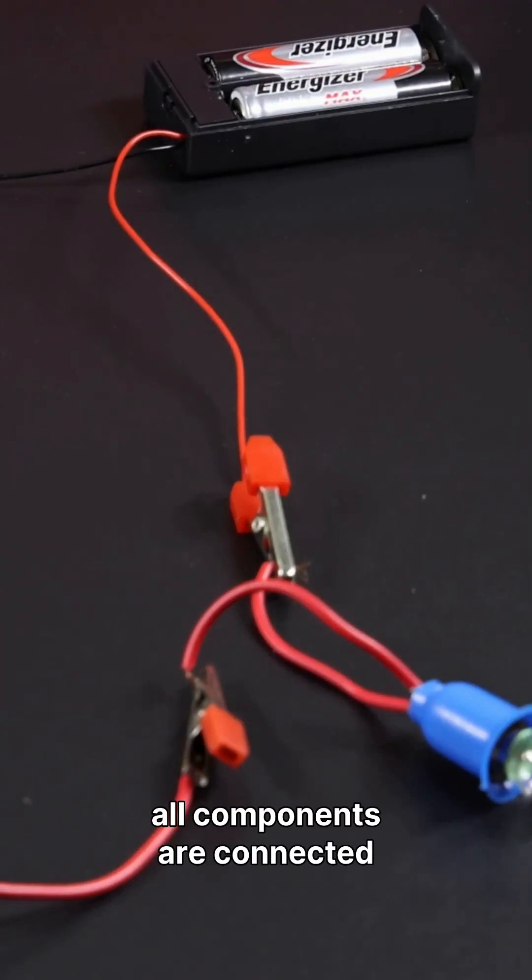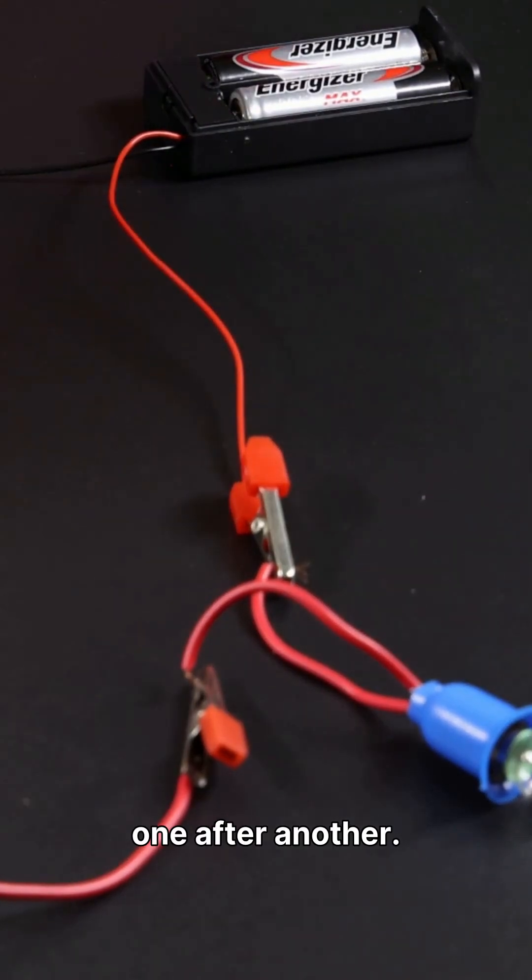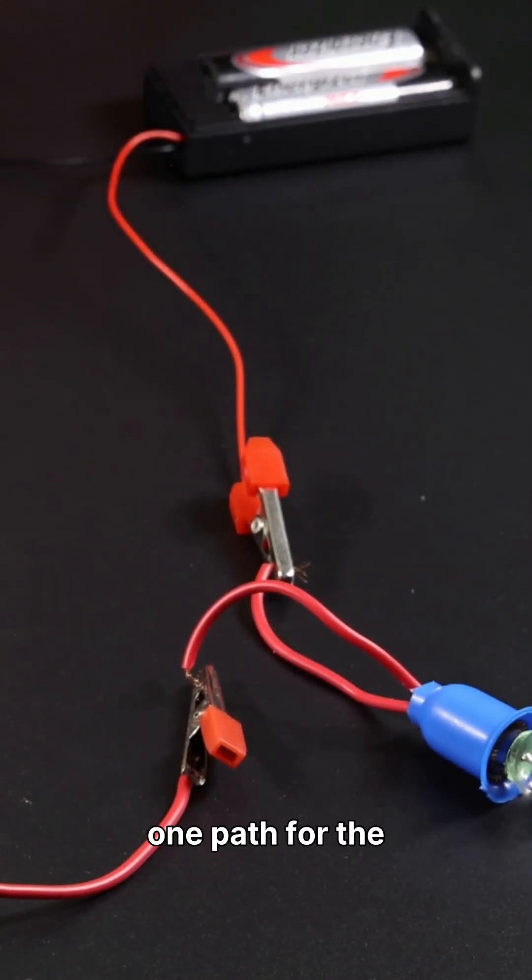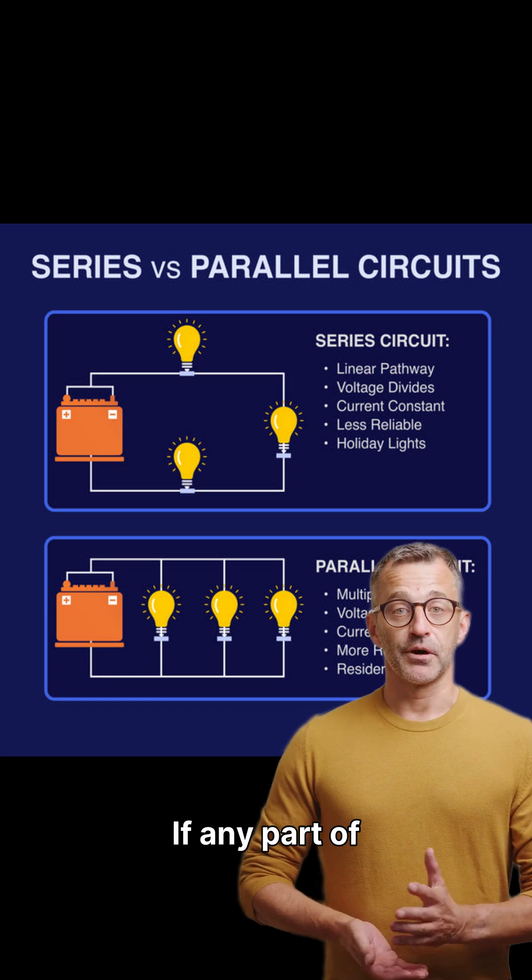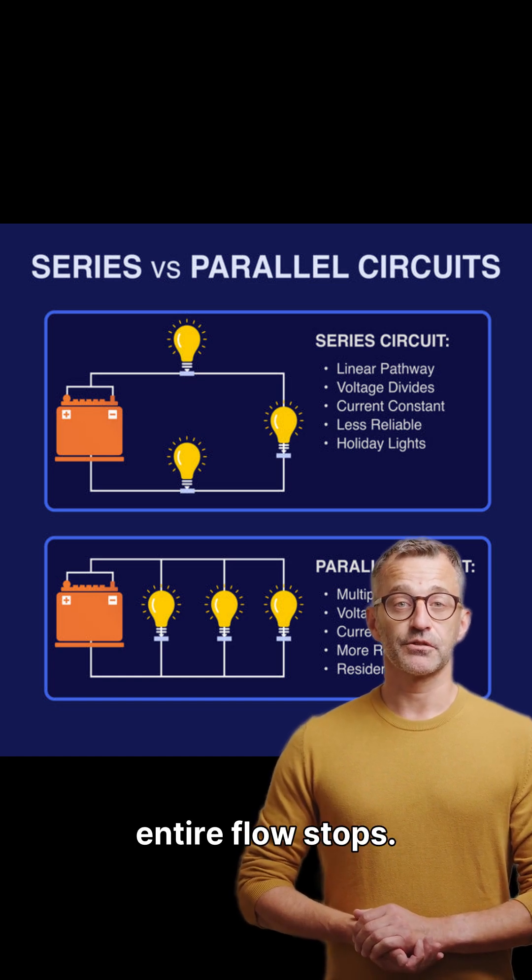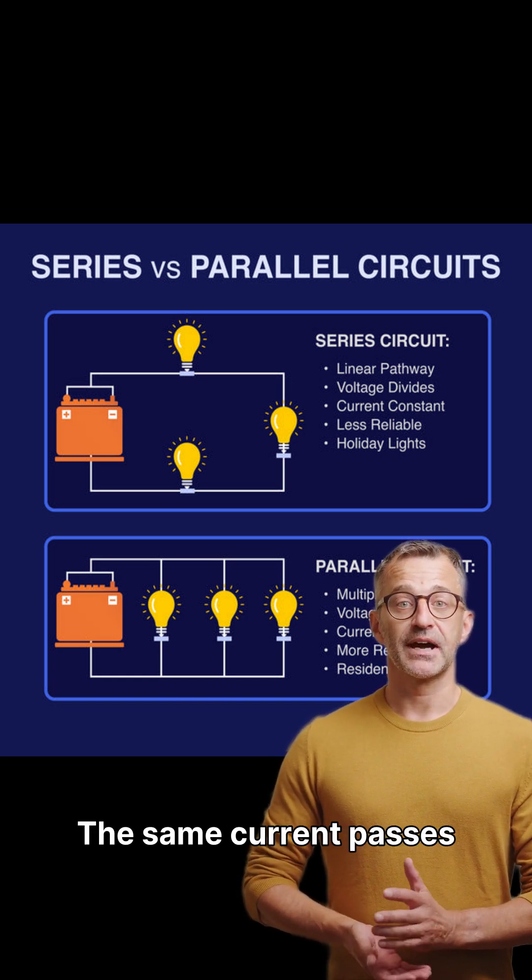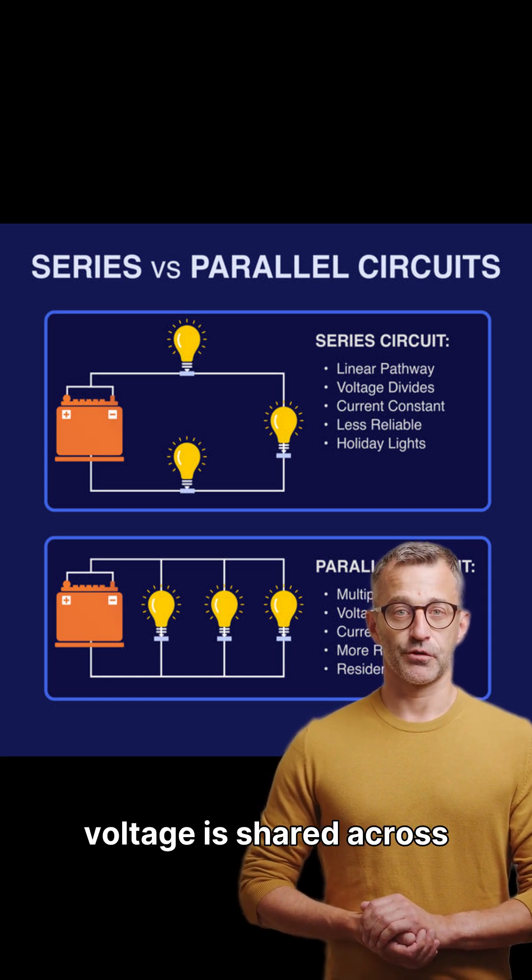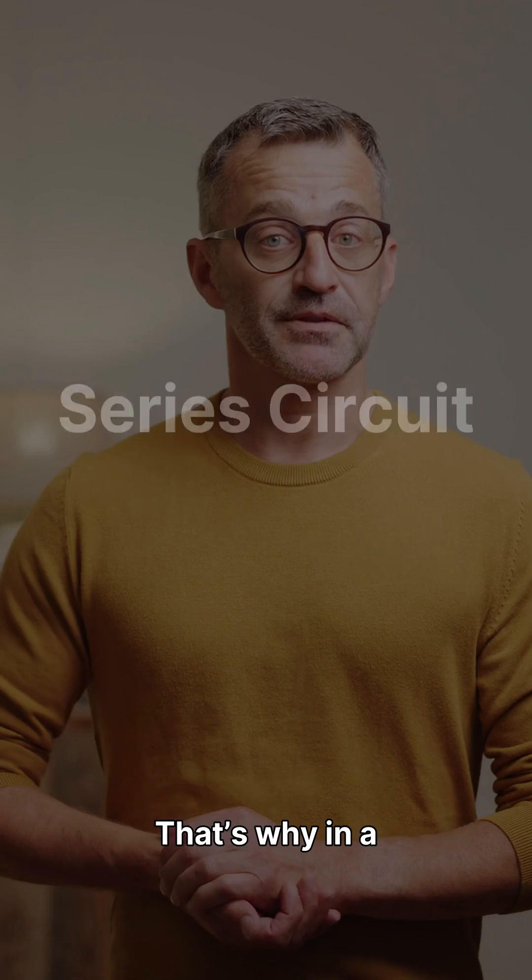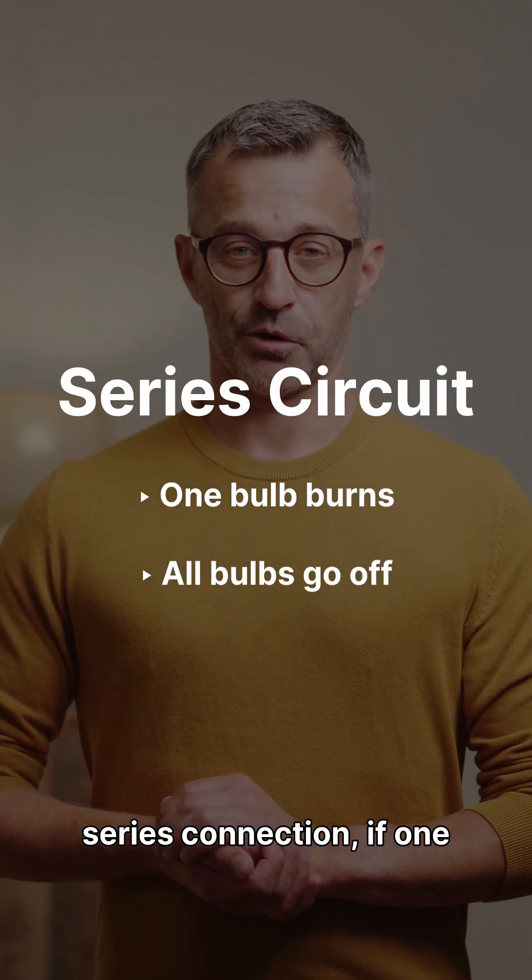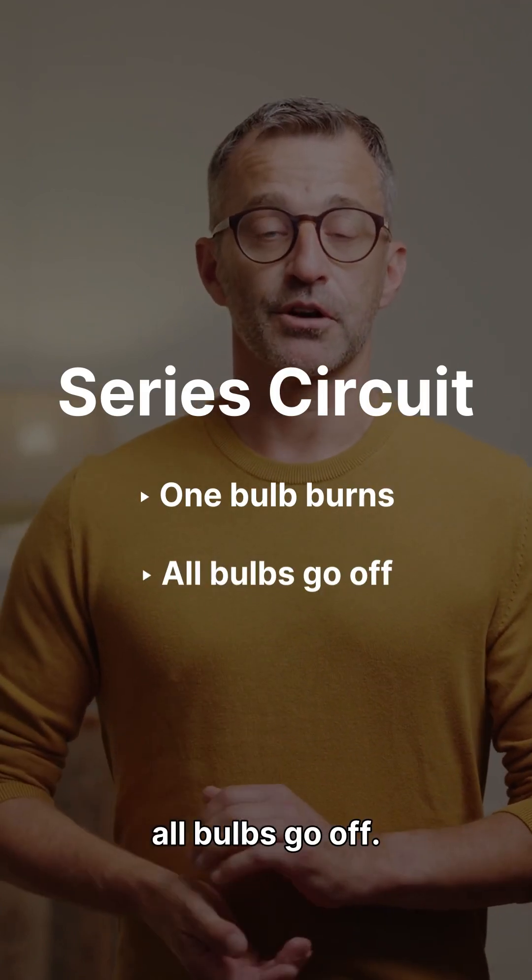In a series circuit, all components are connected one after another. That means there's only one path for the current. If any part of the circuit breaks, the entire flow stops. The same current passes through every bulb, but voltage is shared across them. That's why in a series connection, if one bulb burns out, all bulbs go off.